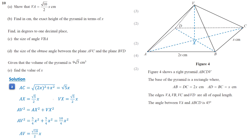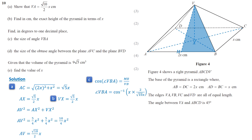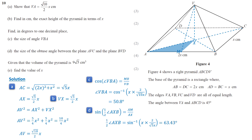By Pythagoras' theorem, AV squared equals AX squared plus VX squared. Substituting and simplifying, we get AV equals root 10 over 2 times x. Since VX is the height of the pyramid, we have done part B. In part C, we have to find angle VBA. Assume M is the midpoint of AB. Since VA and VB are equal, VM is the perpendicular bisector of AB. In right triangle VMB, cosine of angle VBA equals MB over VB, so angle VBA is the cosine inverse of MB over VB. Substituting MB equals x and VB equals root 10 over 2 times x, using a calculator gives angle VBA equals 50.8 degrees. In part D, we need to find the obtuse angle between plane AVC and plane BVD, which is the same as finding angle AXB.